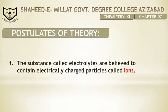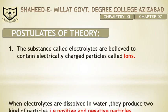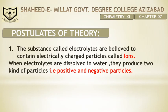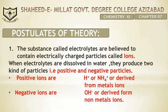Postulates of the Theory. The substances called electrolytes are believed to contain electrically charged particles called ions. When electrolytes are dissolved in water, they produce two kinds of particles — positive and negative particles. Positive ions are H⁺, NH₄⁺, and those derived from metal ions. Negative ions are OH⁻ and those derived from non-metal ions.